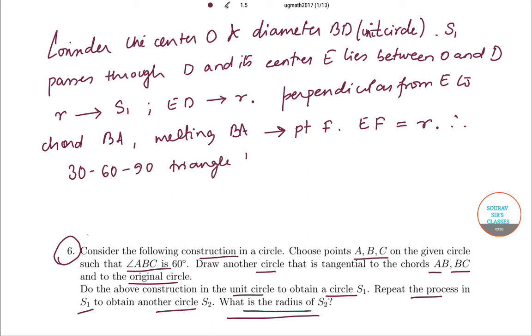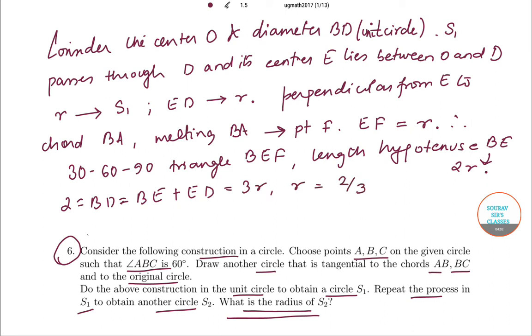Then the length EF is also r. And therefore in the 30-60-90 triangle which is BEF, the length of the hypotenuse BE becomes 2r. Thus 2 is equal to BD, which is equal to BE plus ED, which is equal to 3r. And from here we get r is equal to 2/3.